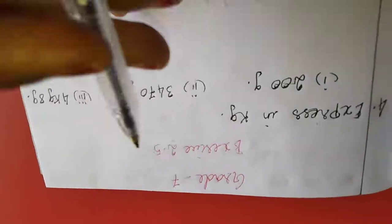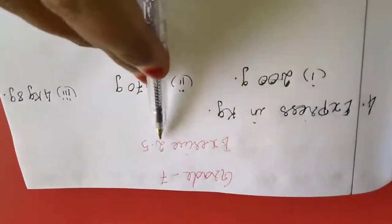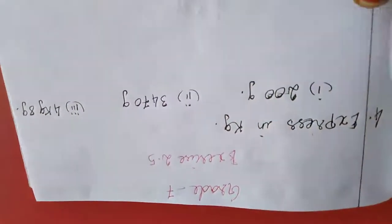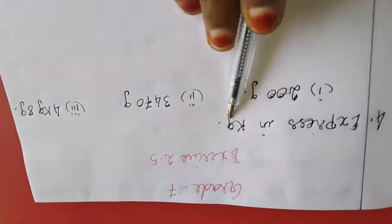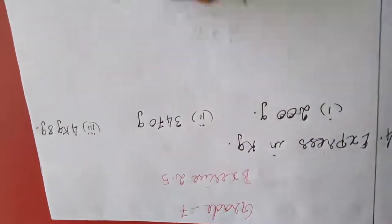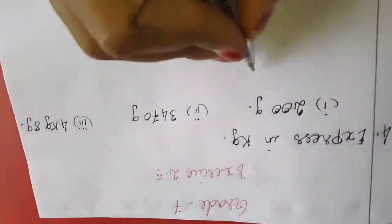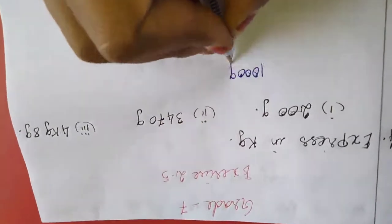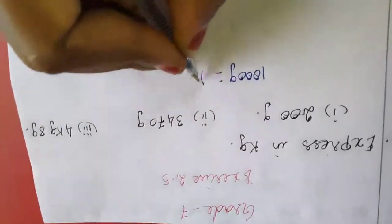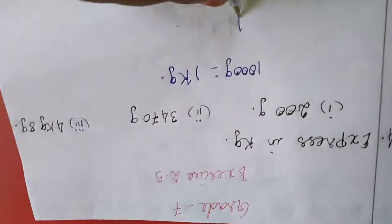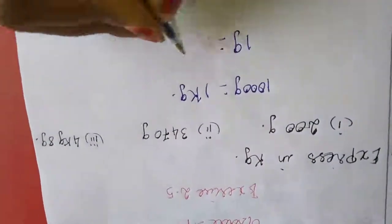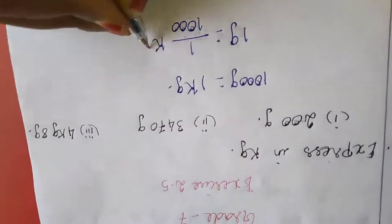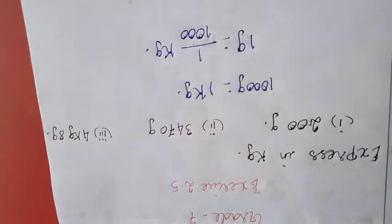Hi dears. In last class we completed exercise 2.5 up to 3 sums. Now the 4th sum: express in kilogram. First we will write the gram formula: 1000 gram equals 1 kilogram, so 1 gram equals 1 by 1000 kilogram. This is the formula.